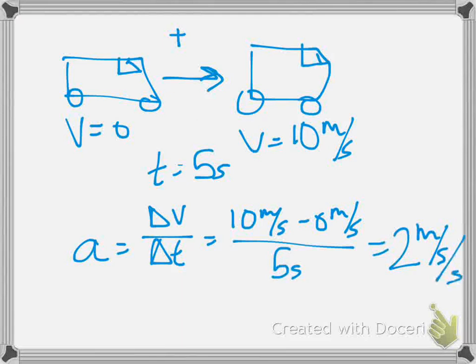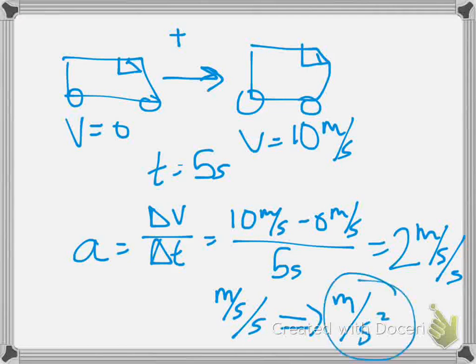We have the unit of meters per second from the velocity on top, and seconds on the bottom from the time. So meters per second per second is the unit for acceleration, which can also be written as meters per second squared. Both are the exact same thing - we tend to prefer meters per second squared because it's easier to write.